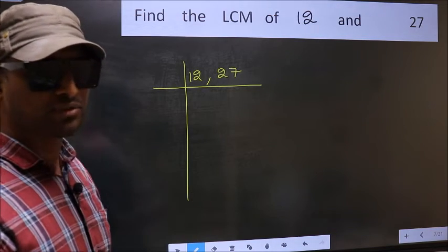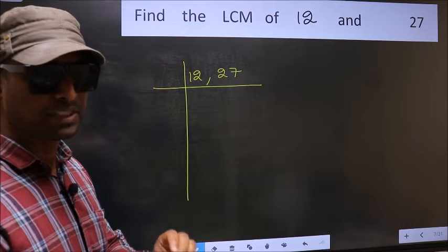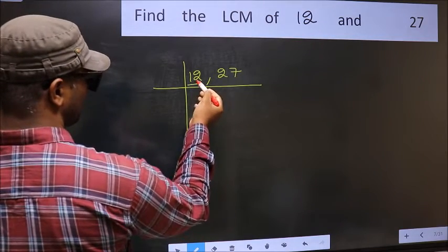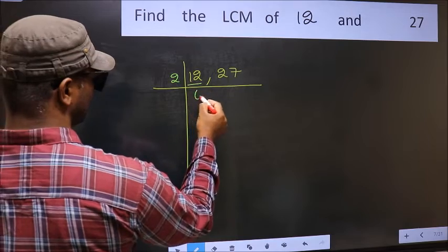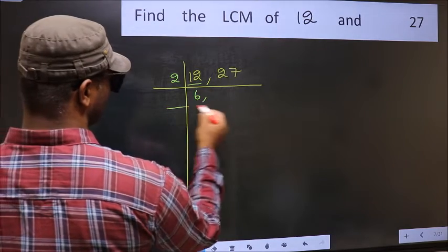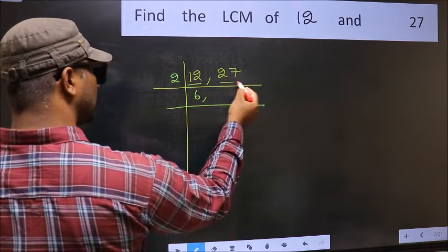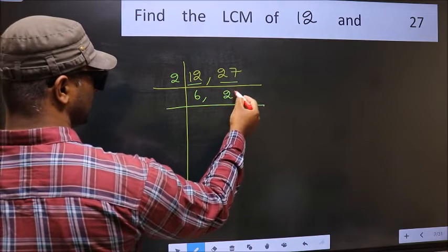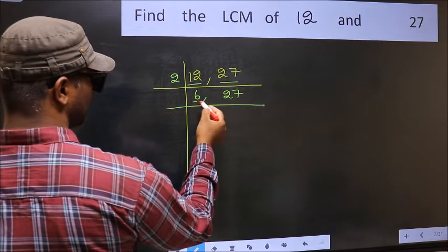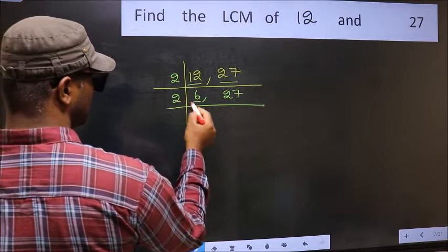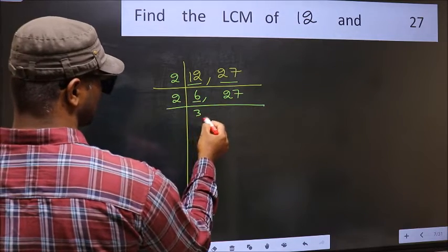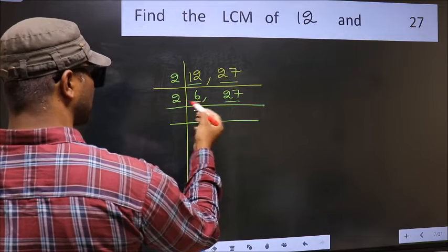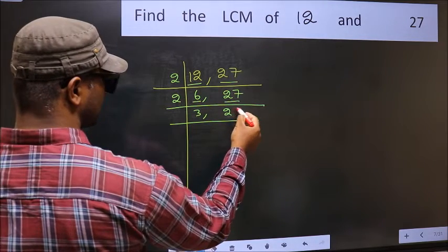Now focus on the first number, which is 12. 12 divided by 2 gives 6, and 6 divided by 2 gives 3. For the other number, 27 is not divisible by 2, so you write it down as it is each time.